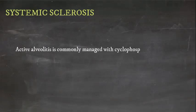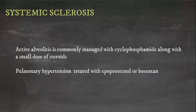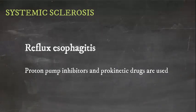Active alveolitis in lung disease is commonly managed with cyclophosphamide along with a small dose of steroids. Pulmonary hypertension in scleroderma may be treated with epoprostenol or bosentan. For reflux esophagitis, proton pump inhibitors and prokinetic drugs are used.